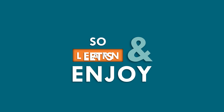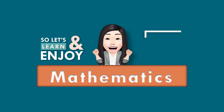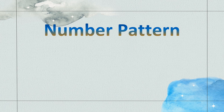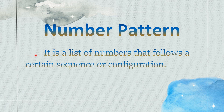Let's learn and enjoy Mathematics! Let us discuss about Number Patterns. What is a Number Pattern? A Number Pattern is a list of numbers that follows a certain sequence or configuration. If we look at it, a Number Pattern has a pattern — numbers in a sequence follow a pattern. We can identify from different kinds of sequences what the pattern could be.